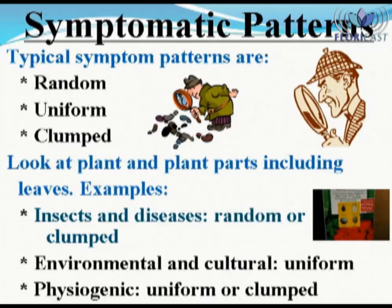It is important to determine the types of patterns associated with symptoms expressed by plants that are being fed upon, so as to determine if insect and or mite pests are actually causing the problem. There are three typical symptomatic patterns: random, uniform, and clumped. A crop infested with insect and or mite pests will result in either random or clumped distribution of symptoms. A uniform distribution is usually not associated with insect and or mite pests — this is typically affiliated with an environmental issue such as inadequate temperatures or light conditions, or a cultural problem such as improper watering or fertility.